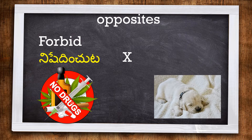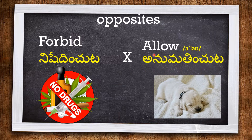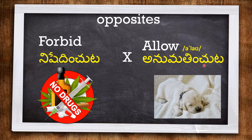Here, no drugs — drugs are not allowed, meaning drugs are forbidden. The opposite of FORBID is ALLOW. Some people allow their pets to sleep along with them on their beds.